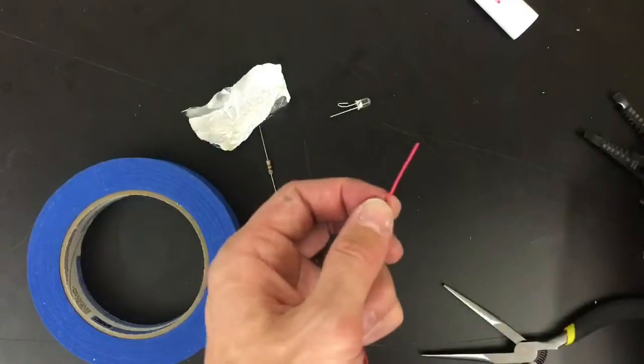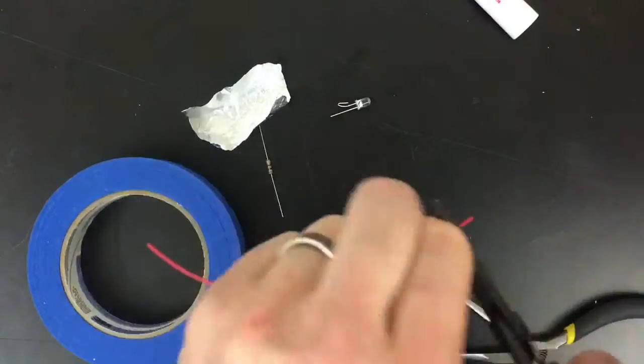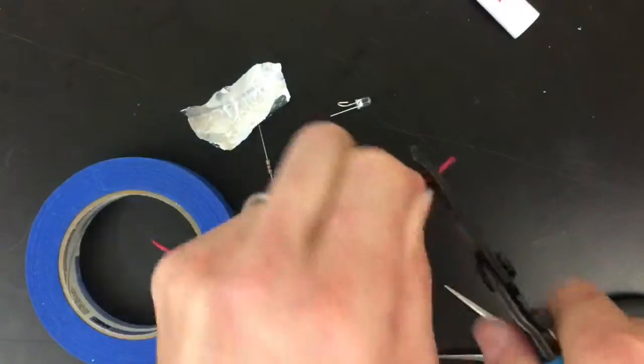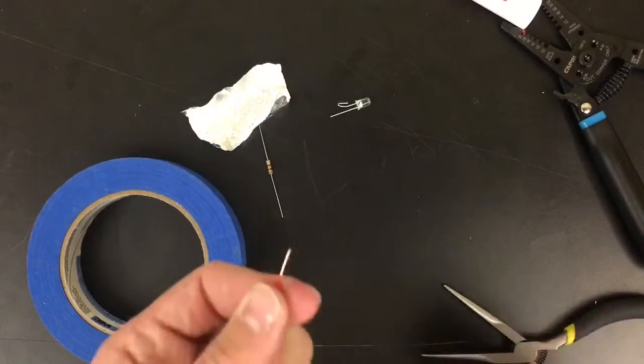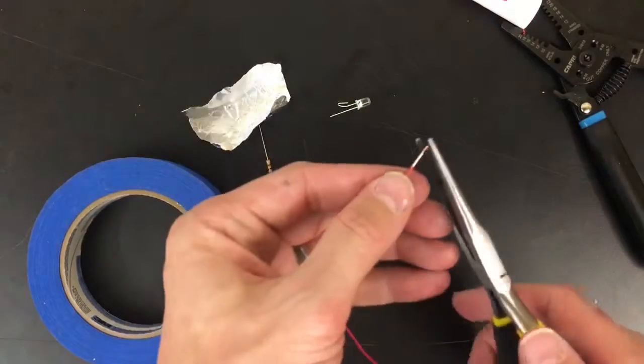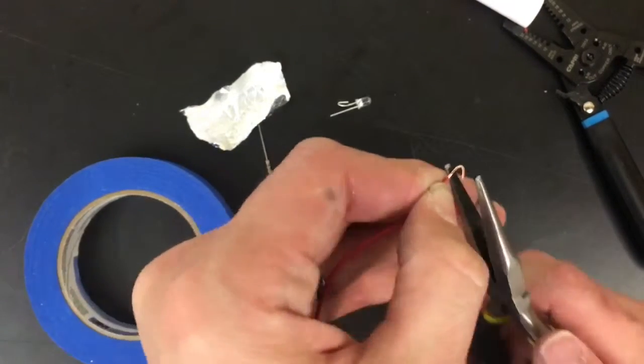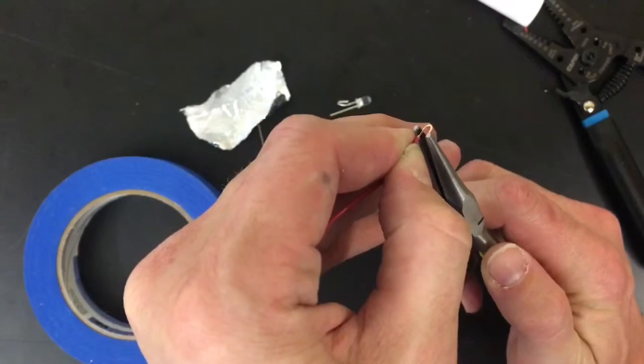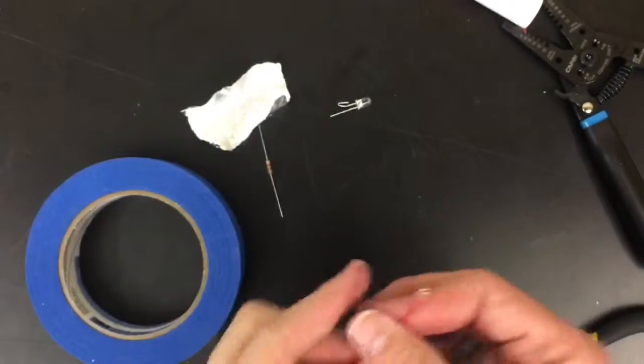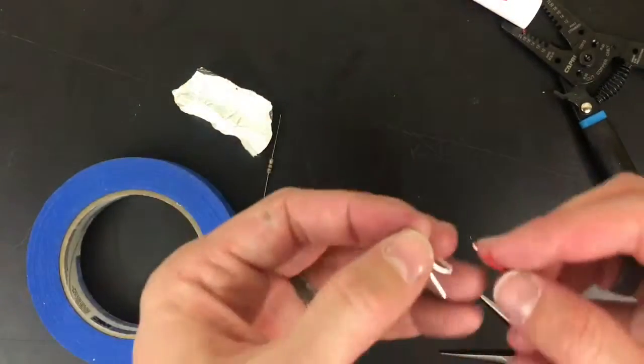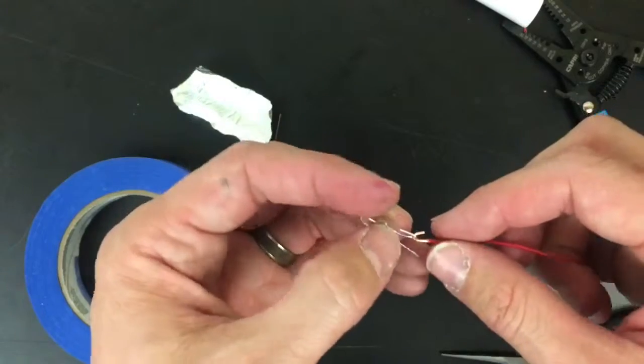Then I'm going to strip this red wire. Notice I'm going to give this a little twist before I actually pull it off. That usually helps it pull off a little bit more effectively. And I'm going to twist this wire in the same way that I twisted the LED. Notice I'm using the needle nose pliers to kind of push this twist so it makes a little U.